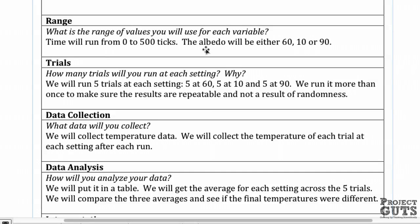We'll have three different settings for albedo: 60, 10, and 90. That means that we're going to run this for 500 ticks for an albedo of 60, for 500 ticks for an albedo of 10, and for 500 ticks for an albedo of 90.